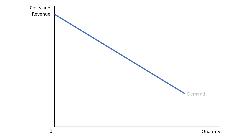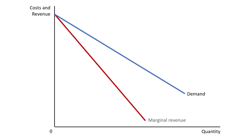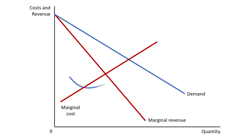This is the downward sloping demand curve, this is the marginal revenue curve, this is the upward sloping marginal cost curve, and this is the U-shaped average total cost curve.